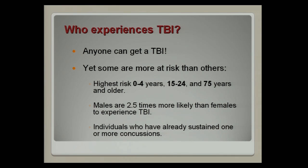So who experiences brain injury? Well, anyone can get a brain injury, yet some are at more risk than others. The highest risk age ranges are 0–4 years, 15–24, and 75 years and older. Ages 0–4 would be our toddlers just starting to walk and falling. Ages 15–24 are teenagers at high risk who are starting to drive. And then 75 years and older — it's a fall risk again.